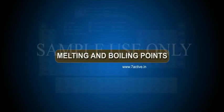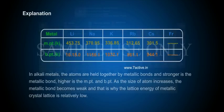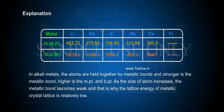Melting and boiling points. Explanation. In alkali metals, the atoms are held together by metallic bonds and stronger is the metallic bond, higher is the m.pt and b.pt. As the size of atom increases, the metallic bond becomes weak and that is why the lattice energy of metallic crystal lattice is relatively low.